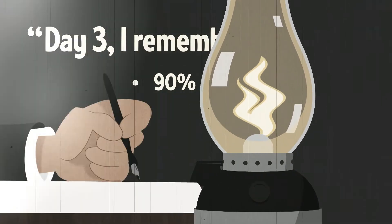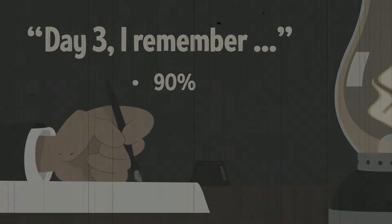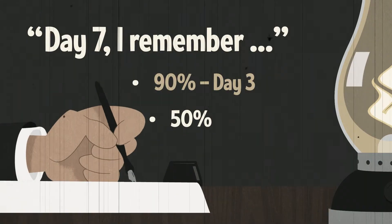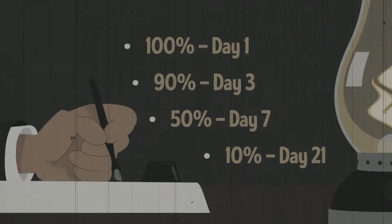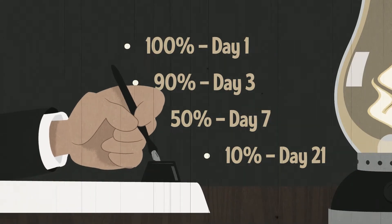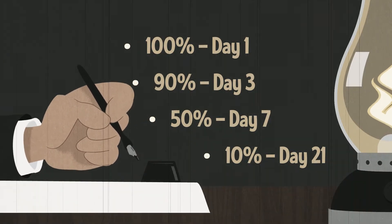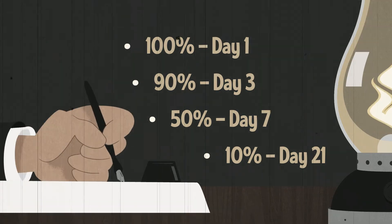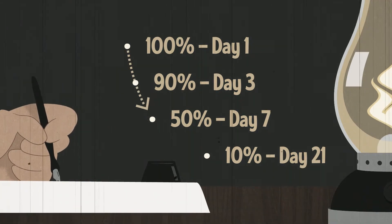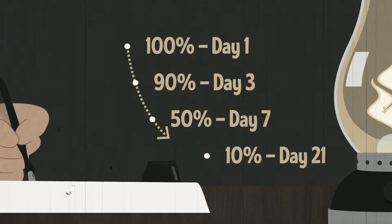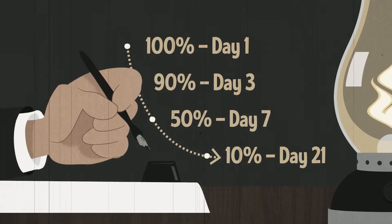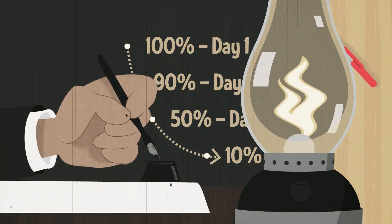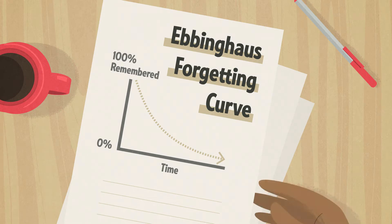Psychologist Herman Ebbinghaus was curious about the rate at which the human brain forgets new information. His research shows that although we retain 100% of the information we learn at the moment we learn it, our ability to recall that information drops quickly and then levels off over time. This phenomenon is sometimes called the Ebbinghaus forgetting curve.